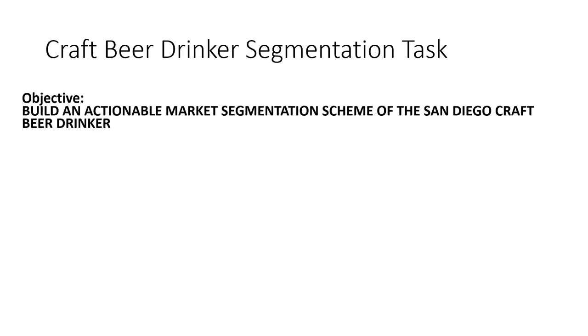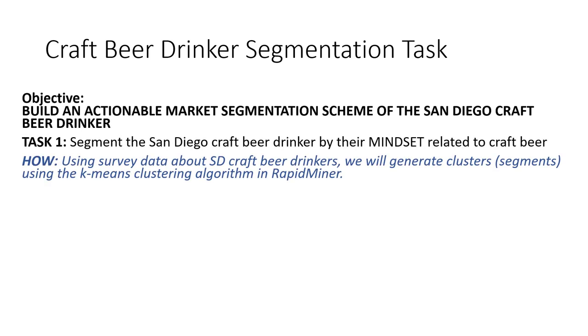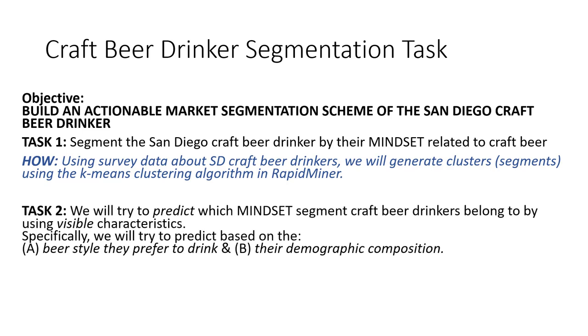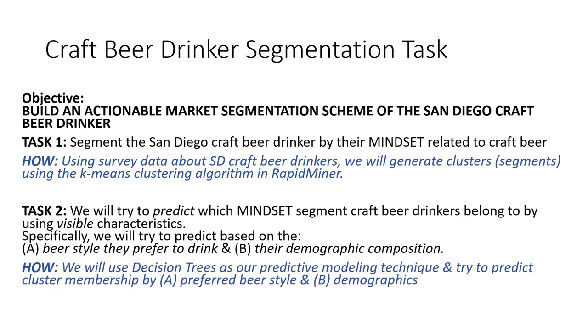Now that we understand the relationship between the data we've collected and our intentions to build a segmentation scheme based on needs and mindset, and the use of demographic or behavioral data to predict that underlying mindset, let's break down the specific tasks. Our first task is to segment the market using the San Diego craft beer drinker data, generating clusters using the k-means clustering algorithm in RapidMiner. For our second task, we'll try to predict which clusters people belong to using either their beer style preference or demographic category, building prediction models using decision trees.